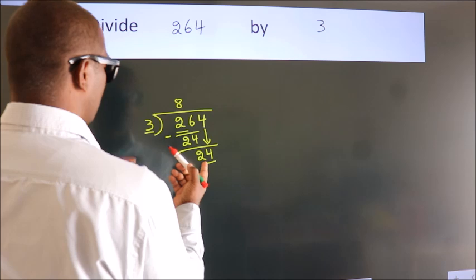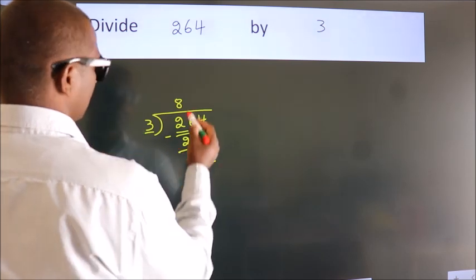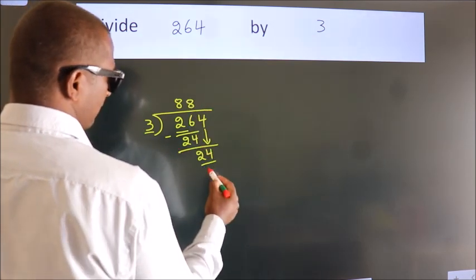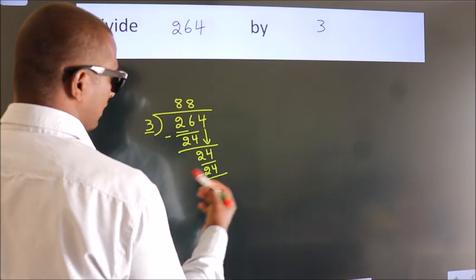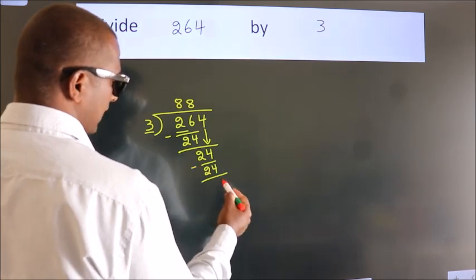When do we get 24 in the 3 table? 3×8=24. Now we subtract. We get 0.